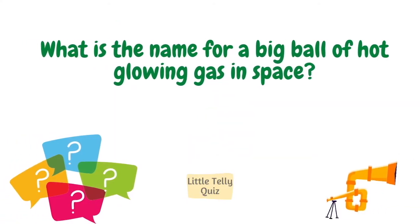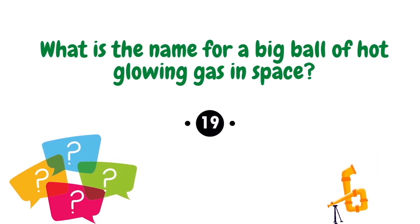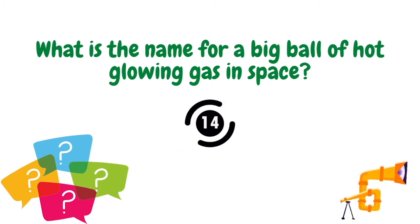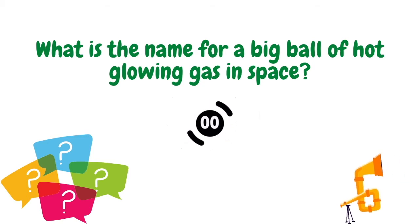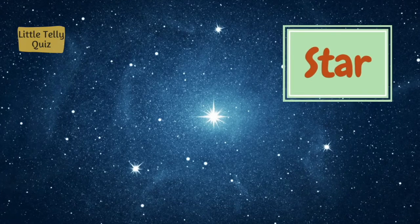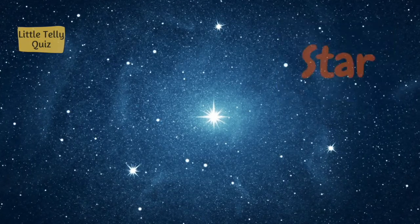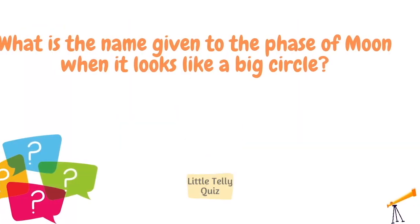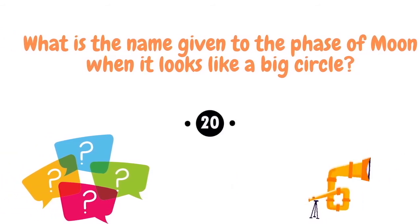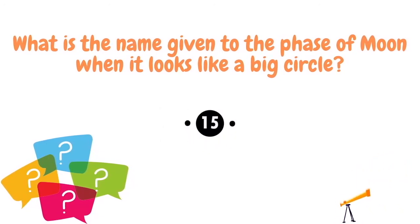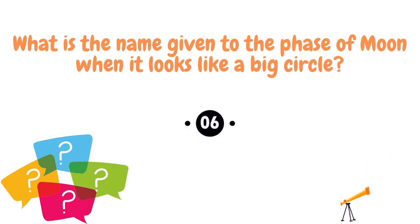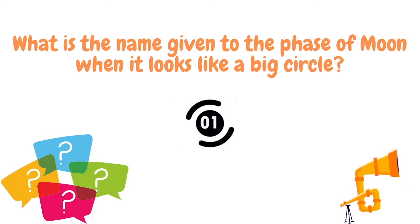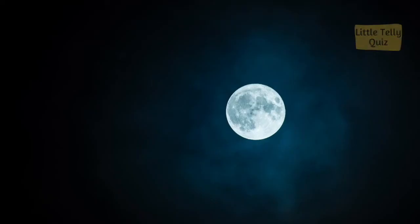What is the name for a big ball of hot glowing gas in space? The answer is star. What is the name given to the face of the moon when it looks like a big circle? The answer is full moon.